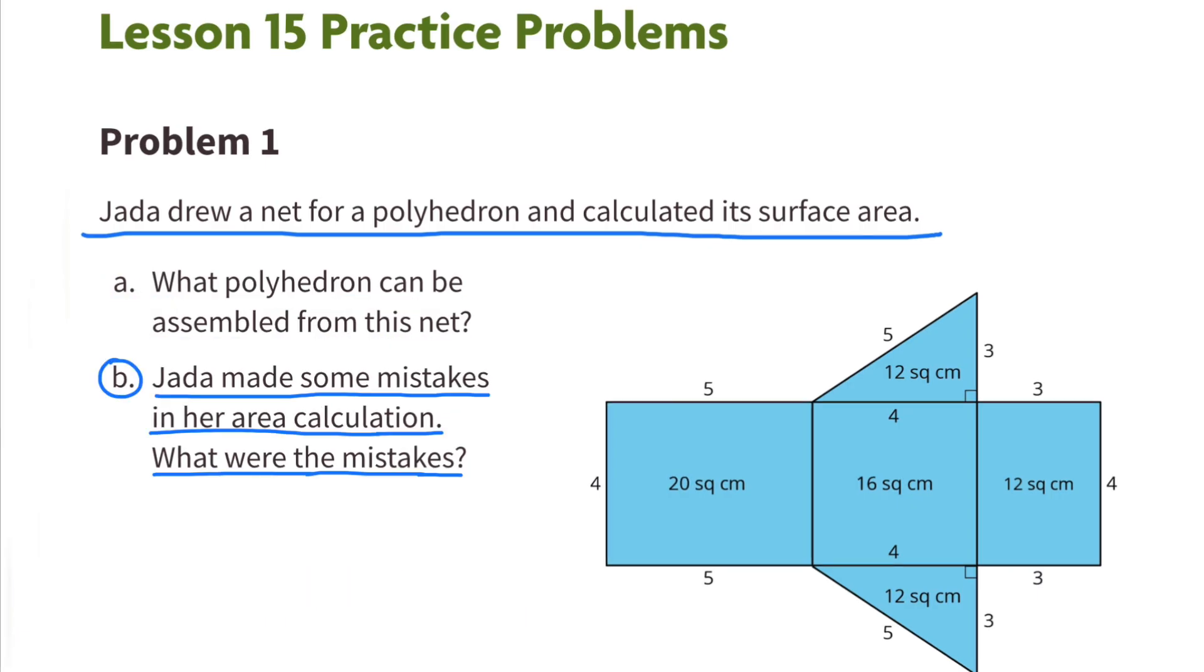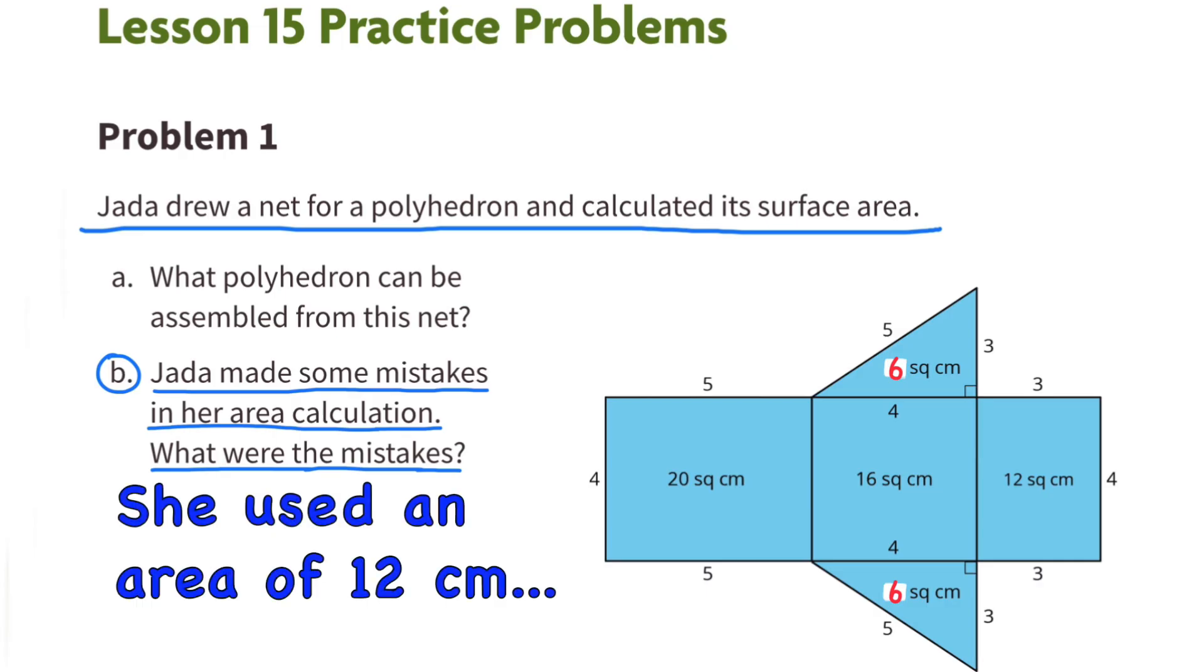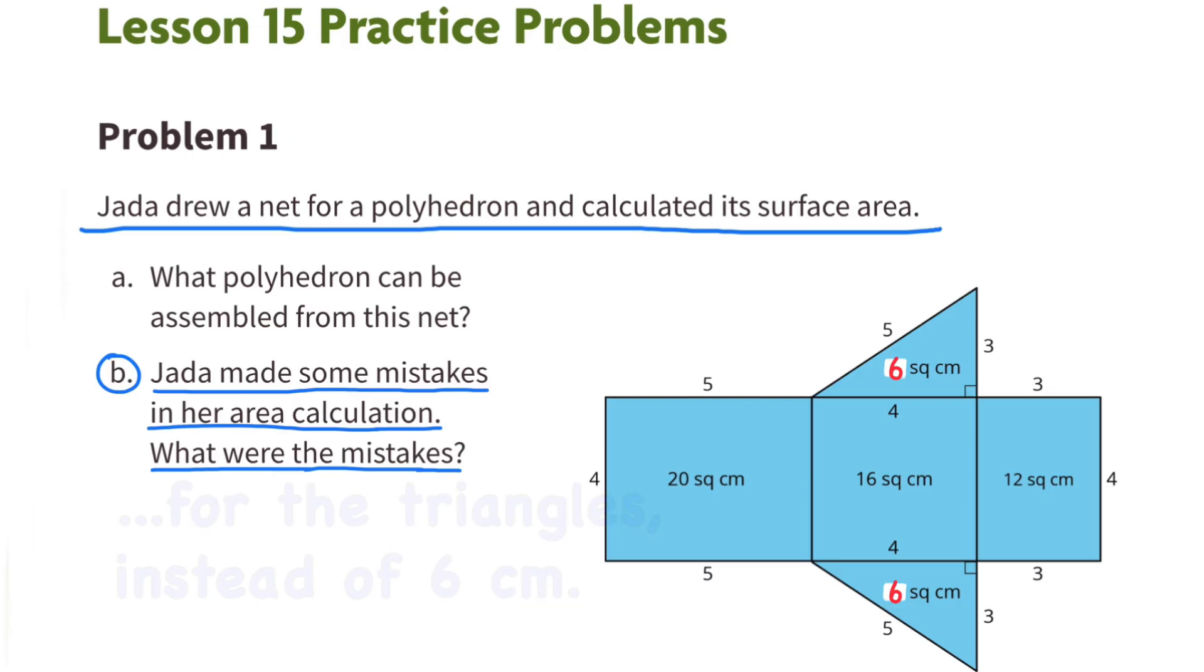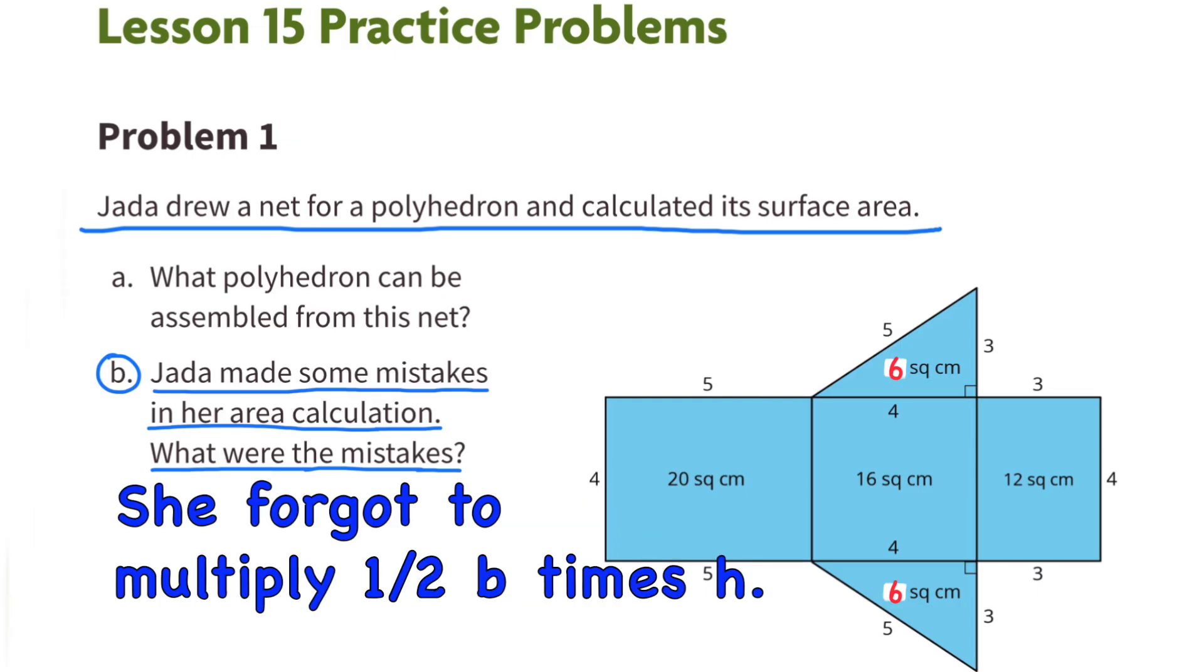Part B: Jada made some mistakes in her area calculation. What were the mistakes? She used an area of 12 centimeters for the triangles instead of 6 centimeters. She forgot to multiply half the base times the height.